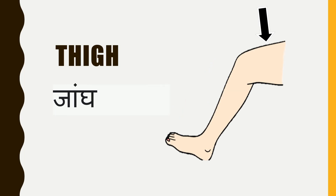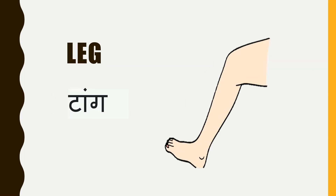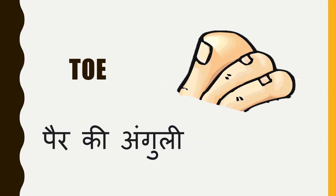Thigh, and in Hindi, they are called jaang. Leg, in Hindi, we call them taang or taange. Toes, in Hindi, they are called pairo ki ungli.